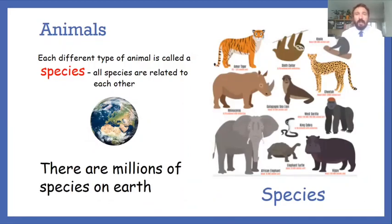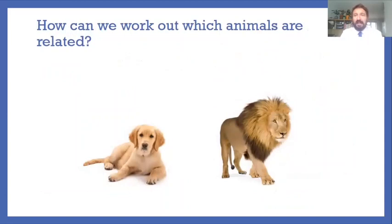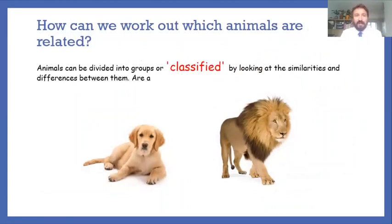There are millions of species on earth. So it is important that we are able and scientists are able to classify which groups these animals fit into. So animals can be divided into groups and this is called classification or they're classified. That can be carried out, and this is what we're going to do today, by looking at the similarities and the differences between them. And here's a question I'm posing to you. I want you to maybe pause the thought here. Are a dog and a lion closely related? What I'd like you to do, take a minute or two, jot down the similarities, the differences, and then we can decide if these animals are closely related or not.